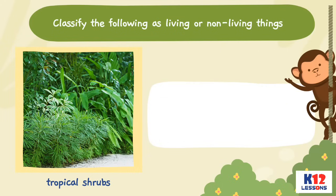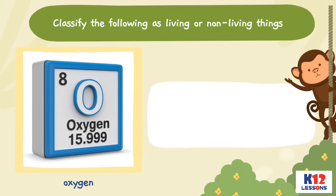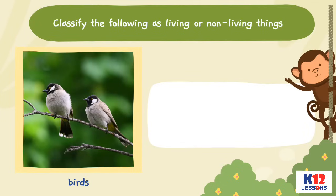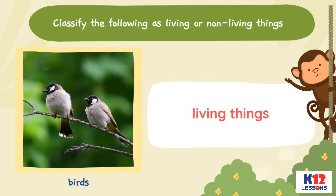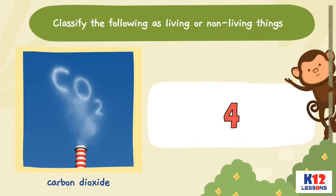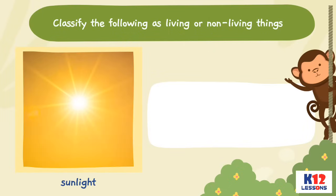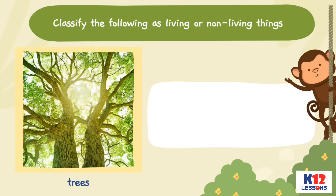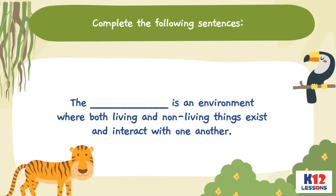Activity: Classify the following as living or non-living things. Tropical shrubs. Oxygen. Birds. Carbon dioxide. Sunlight. Trees.